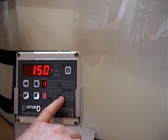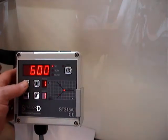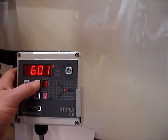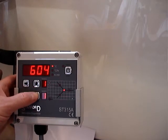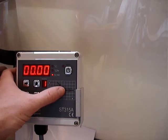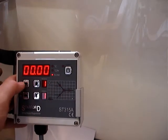So now it's on segment 1, and it's climbing at 150 degrees an hour to a first temperature of 600. All these numbers can be adjusted by pressing the up or the down button. Once it reaches 600, we don't want it to hold 600. We just want it to carry straight on.